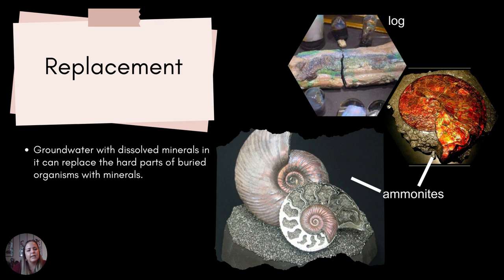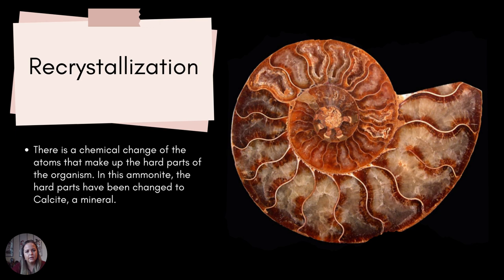With replacement, it's similar because we're still working with water that has dissolved minerals in it, but it completely replaces all of the material — there's no actual specimen left, it's not just filling in pore spaces. This is where the water flowing through actually replaces all of the hard parts. For example, the ammonite in the bottom left here is full pyrite — the ammonite shell isn't there anymore, it's all just pyrite now. Various minerals can crystallize within these samples to help preserve them.